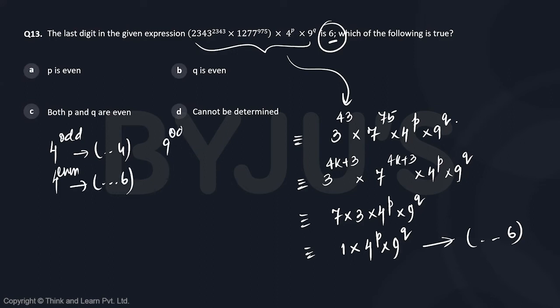9 to the power odd results in 9, and 9 to the power even results in 1.